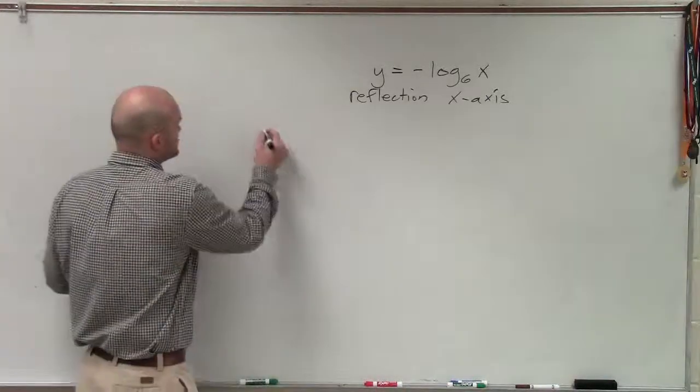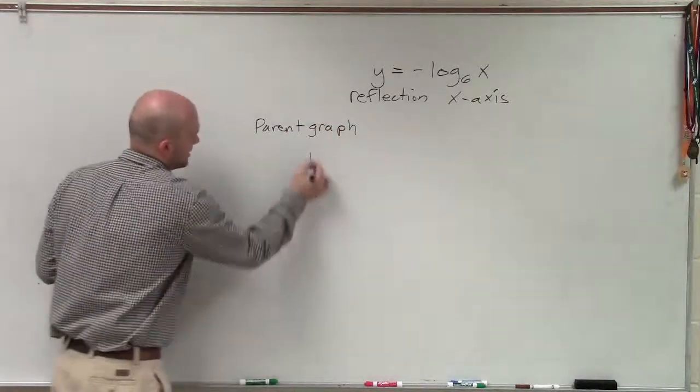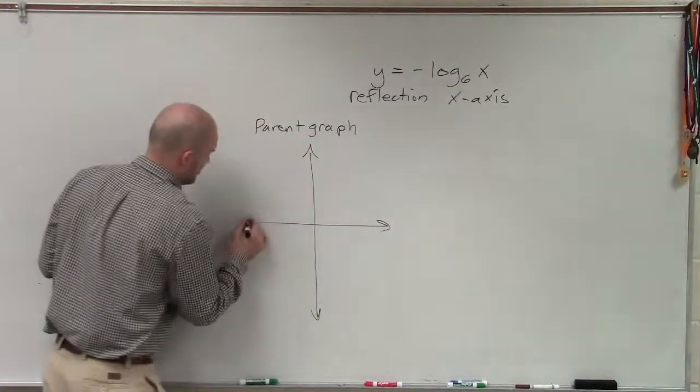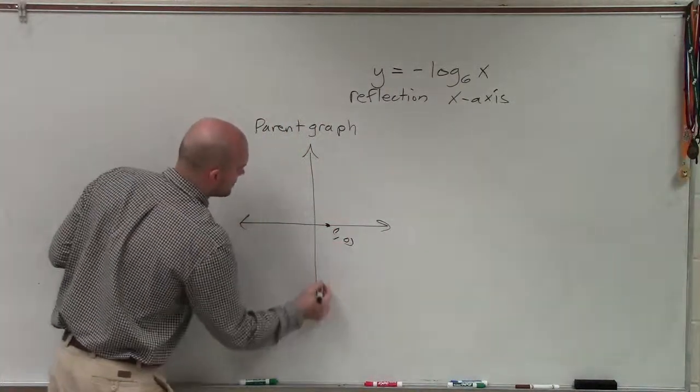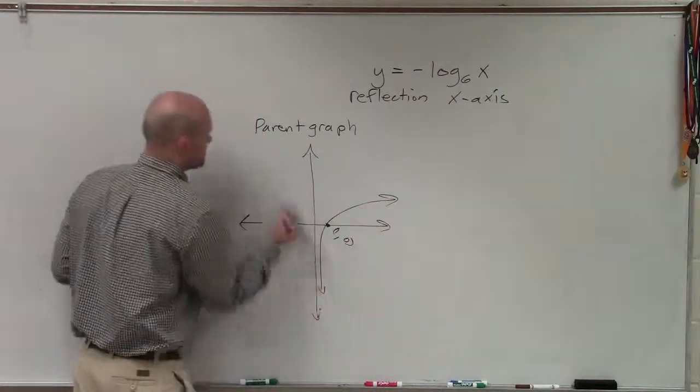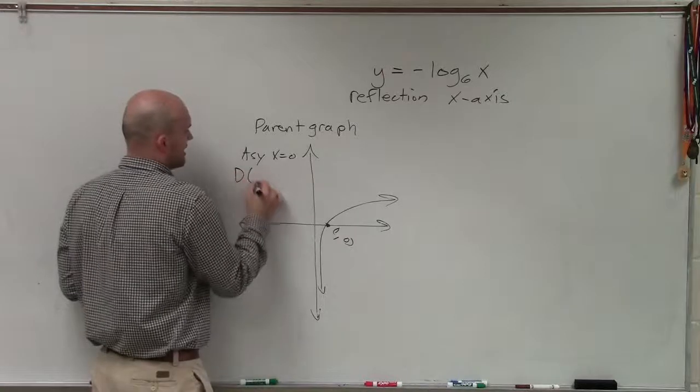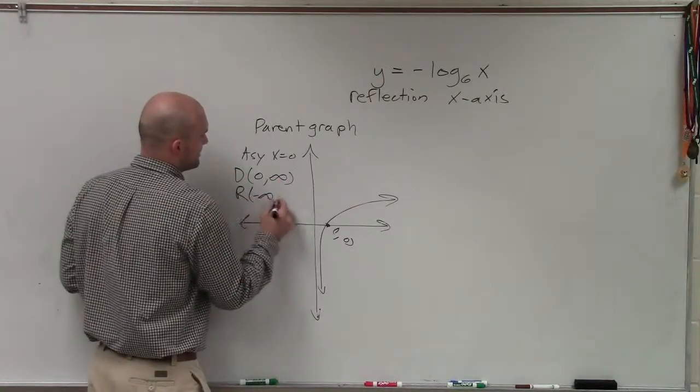So let's go and look at a general parent graph, and then we'll see what the graph is going to do. So the general parent graph of a logarithmic equation with any base, we know that's going to have an x-intercept at 1 comma 0. And it's going to look something like this, where my asymptote is going to be at x equals 0, my domain is from 0 to infinity, and my range is going to be from negative infinity to infinity.